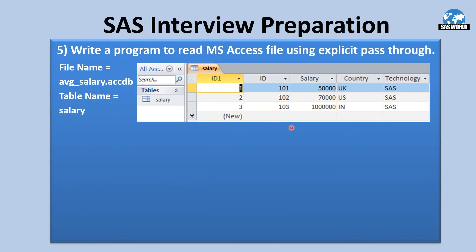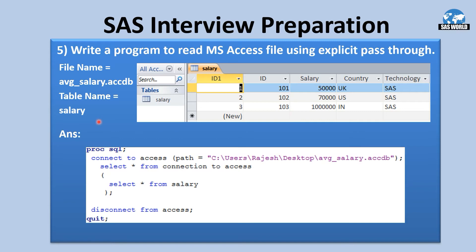The next question: Write a program to read an MS Access file using explicit pass-through. We have an MS Access database file on the desktop named average_salary, with a table called salary. The answer is: PROC SQL; CONNECT TO ACCESS with the location of the file. Then SELECT * FROM CONNECTION TO ACCESS, SELECT * FROM salary — instead of a sheet name we give the table name. Then DISCONNECT FROM ACCESS and QUIT. This way we can read the Microsoft Access file using explicit pass-through.